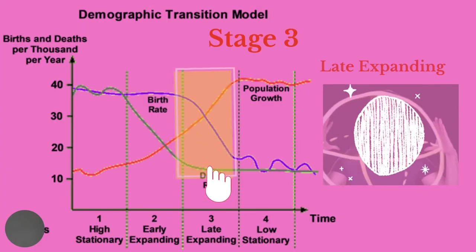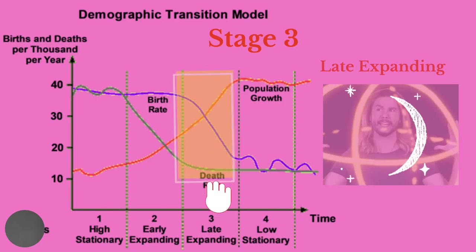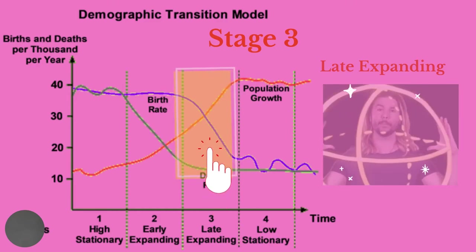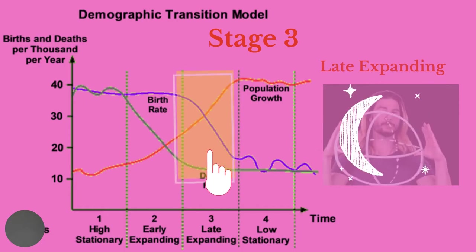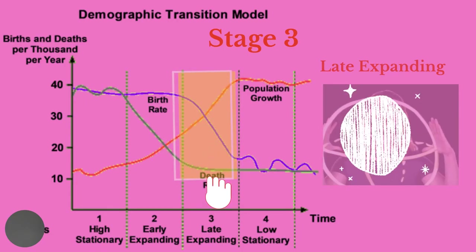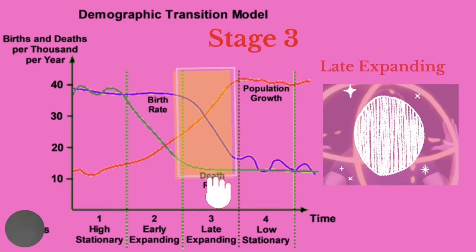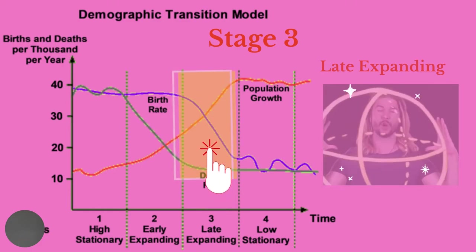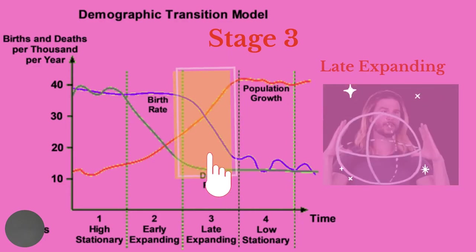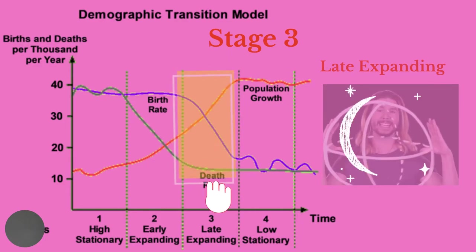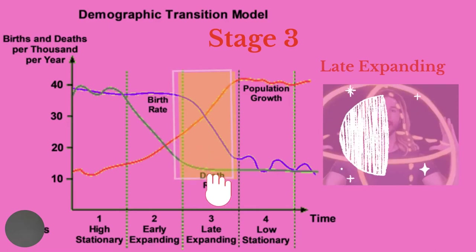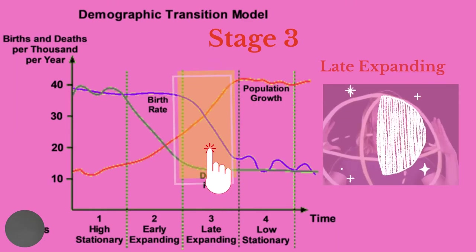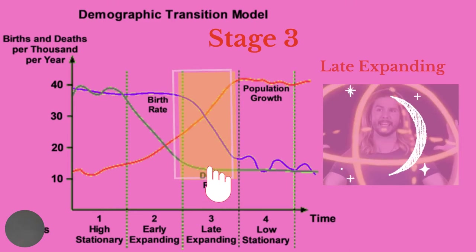At stage three, the gap between birth and death rates narrows as there is a rapid decline in birth rates. Birth rate continues to fall, but at a slower rate. The rate of population growth has slowed down. Birth control is more readily available. Women are pursuing higher education and career goals, and thus have children later in life, which reduces the fertility rate.